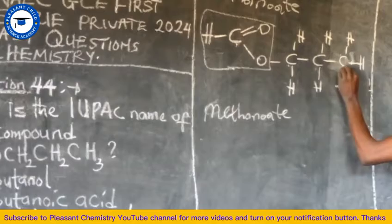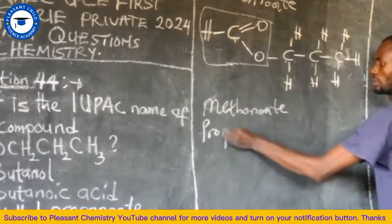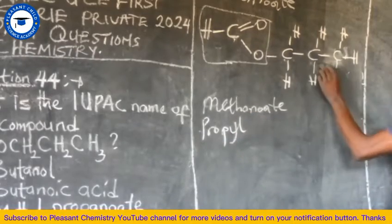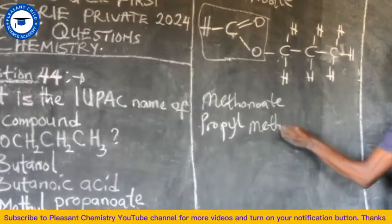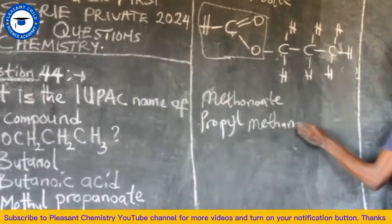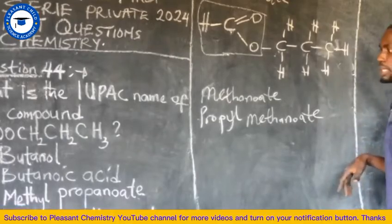So right now, since it's three carbons here and we call it propyl, prop, prop. So the correct name is propyl methanoate. Because methanoate is the family name. Methane, methane, methane, methane.